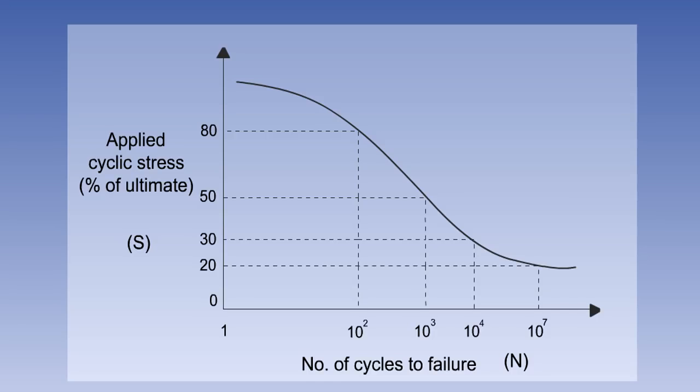This is a graph of the magnitude of the cycle stress, S, against a logarithmic scale of cycles to failure, N. It can be seen that after 100 cycles, at 80% of the ultimate stress, the specimen will fail. But if the stress is reduced to 30% of the ultimate, then the component will fail after 10,000 cycles.